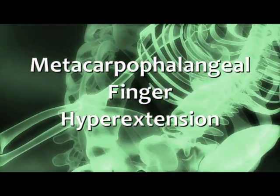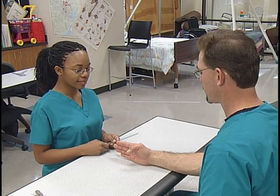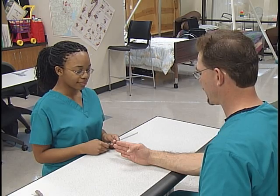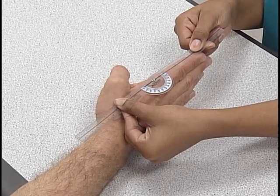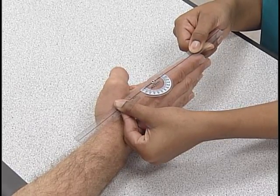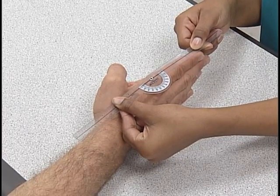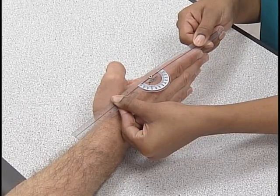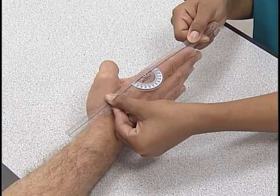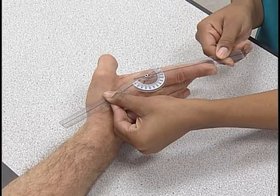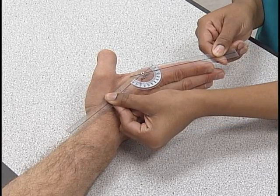For MP hyperextension, the subject is seated with the forearm in mid position, wrist at zero degrees neutral, and the forearm and hand supported on a firm surface on the ulnar border. The axis of the goniometer is over the lateral aspect of the MP joint of the index finger. The stationary bar is parallel to the metacarpal and the movable bar is parallel to the proximal phalanx. The client's finger movement distal of the MP joint is extended up in a sagittal plane of movement. The measurement begins at zero degrees and can range up to 15 to 45 degrees.